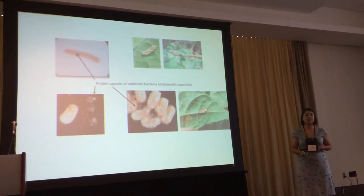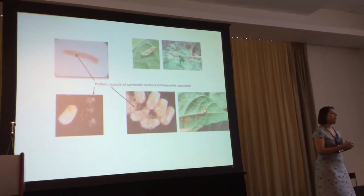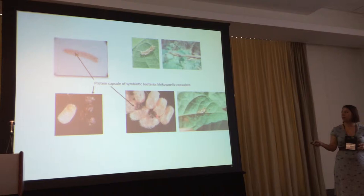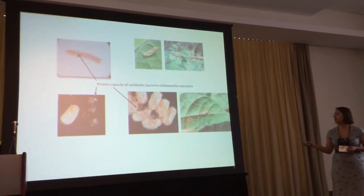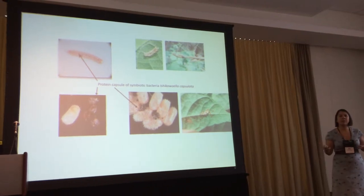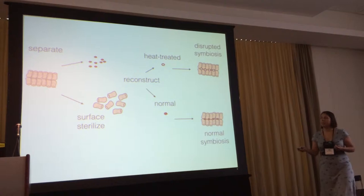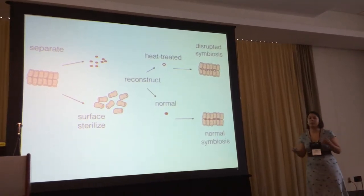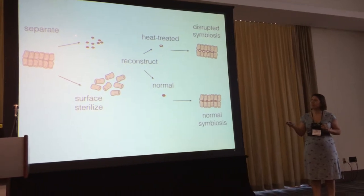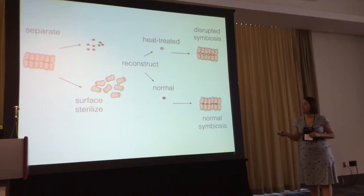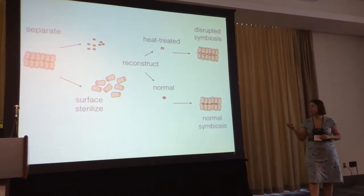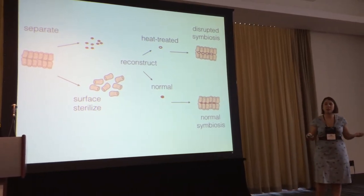We're able to do this in Megacotta because of a unique feature of its biology. Mothers transmit vertically these symbionts in externally packaged symbiont capsules that they oviposit along with eggs. Nymphs that hatch out can then access and probe these capsules to ingest the symbiont and establish the symbiosis. This provides us a powerful experimental tool. Our lab — Michael Gerardo's lab, along with a number of undergraduate assistants — separated the symbiont capsules from the eggs, surface sterilized the eggs, heat-treated a portion of the symbiont capsules, and reconstructed the egg masses to create a disrupted symbiosis as well as a normal symbiosis. We then tracked the impact of this on host development over time.